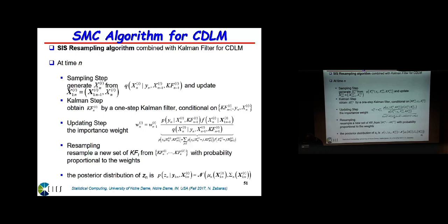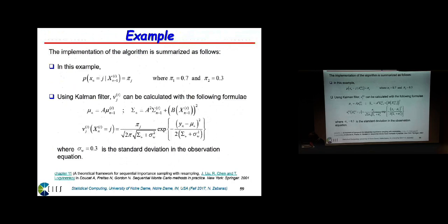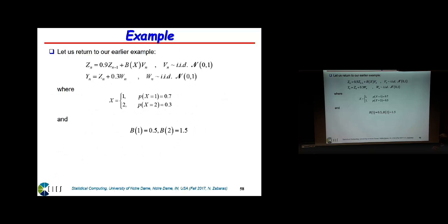Running this, there are examples in the notes. For very specific cases, the Kalman filtering equations and all updates take a closed-form analytical solution. For this particular problem where the X dependency is only on matrix B, and X is a discrete variable taking values 1 or 2 with probabilities 0.7 and 0.3, with B(1)=0.5 and B(2)=1.5, you can write all equations analytically.